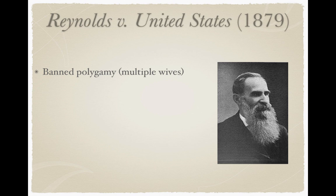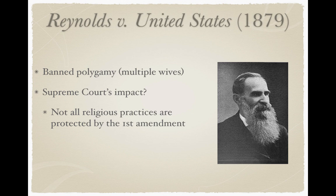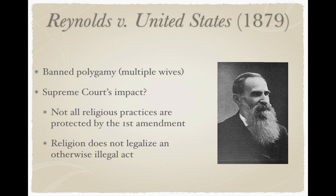Reynolds v. United States from 1879 banned polygamy — multiple wives — out of the state of Utah. The Supreme Court ruled that not all religious practices are protected by the First Amendment. Reynolds was a Mormon who argued his religion allowed for multiple wives. The Supreme Court said religion does not legalize an otherwise illegal act — religion cannot legalize an act that the government deems illegal.